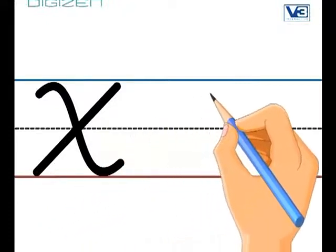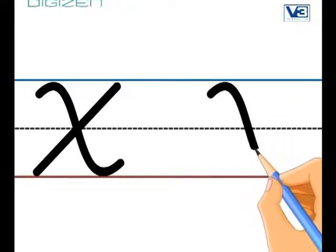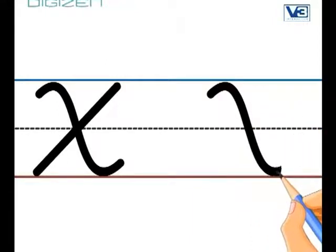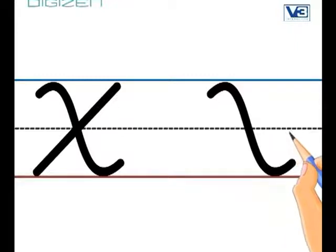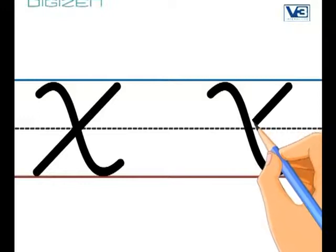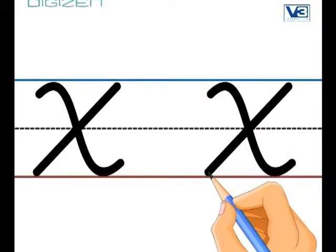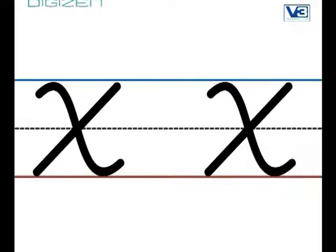You try it. Slide down to the bottom and end with a cursive curl. Go to that top line and slide back to the bottom line, trying to cross it near the middle line. Yes, excellent X.